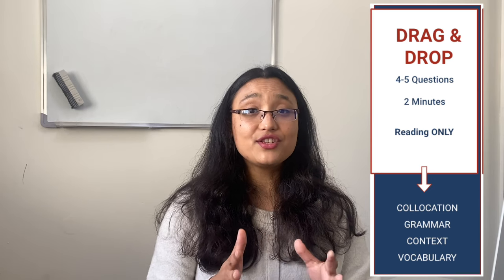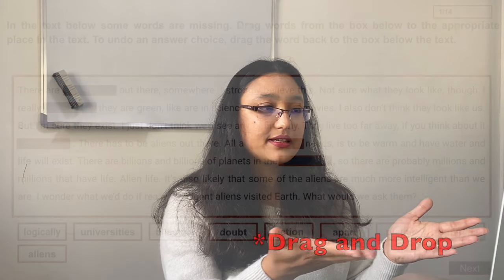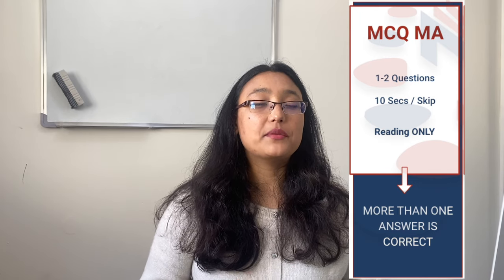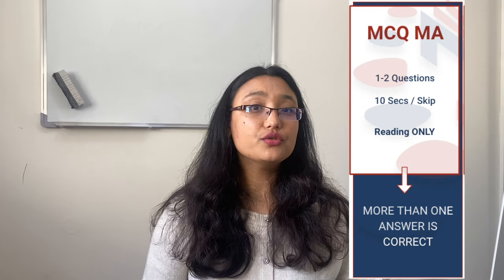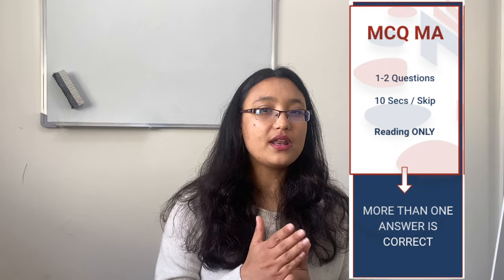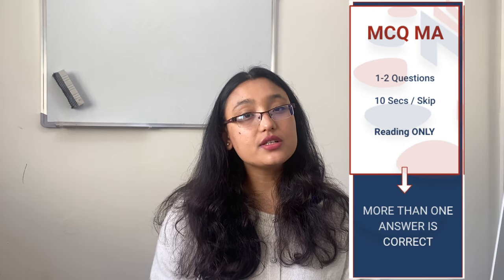There'll be four to five questions and this is one of the important questions in reading. In this drag-and-drop question, blanks appear in the passage and options are given at the bottom. You just drag, for example, "aliens" and drop it into the blank. If you're not happy with your choice, undo it by dragging it back down. On the top right-hand corner, you'll see the number of tasks and a timer. The next question is multiple choice, multiple answer — only one to two questions will come.